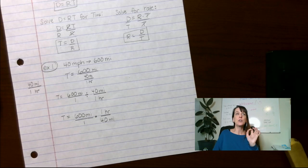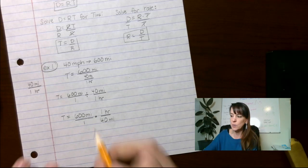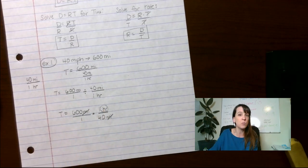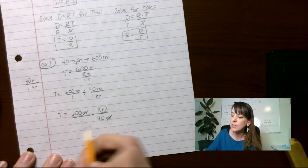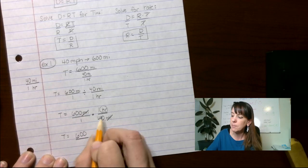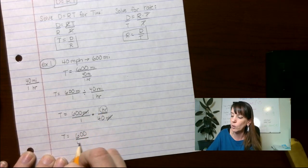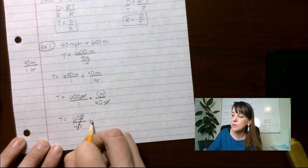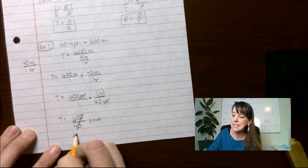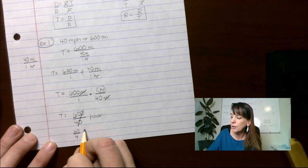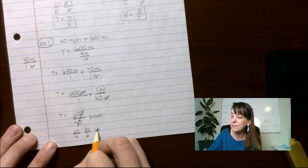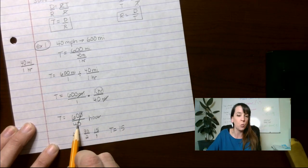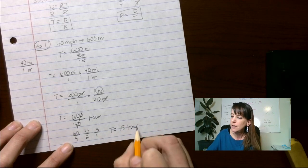So t equals 600 miles over one, times one hour over 40 miles. You've been doing unit conversions, so we can cancel out the miles — miles cancel miles — and now we have hours, which is exactly what we wanted. 600 times one is 600; one times 40 is 40. Lob off the zeros: 60 over 4, cut that in half to get 30 over 2, cut in half again to get 15 over 1. So t equals 15 hours.